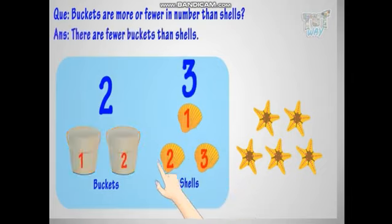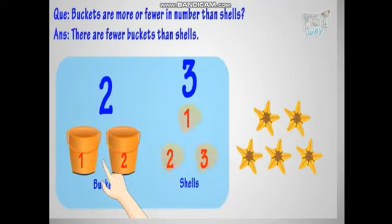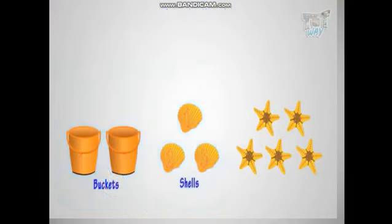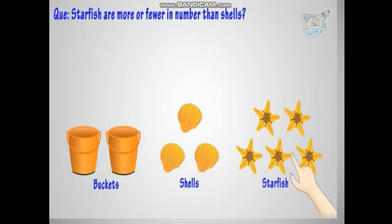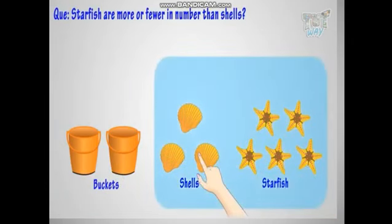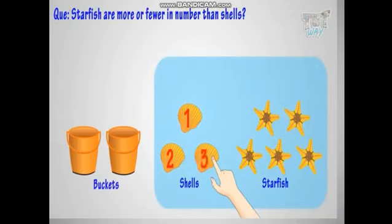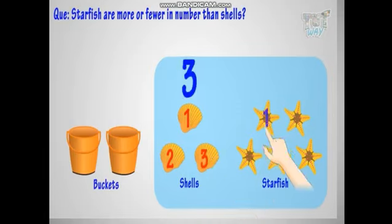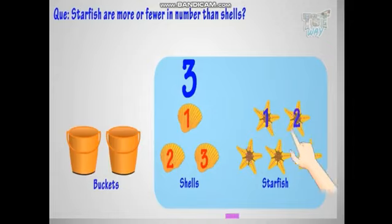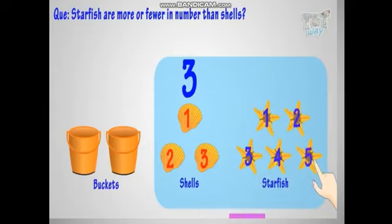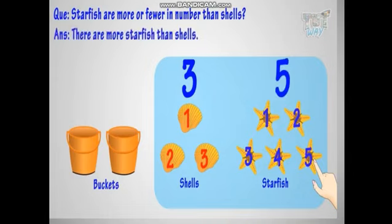So there are fewer buckets than shells. Have a look at these things. Now tell me, are starfish more or fewer than shells? Let's count. Shells are three in number. One, two, three, four, five — starfish are five in number. So there are more starfish than shells.